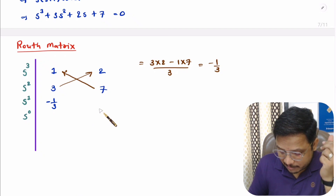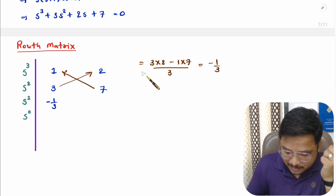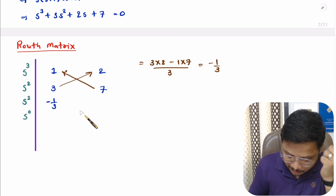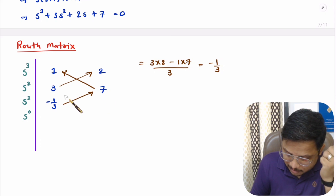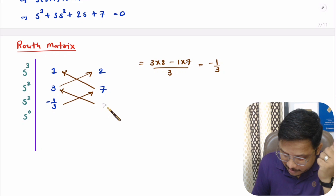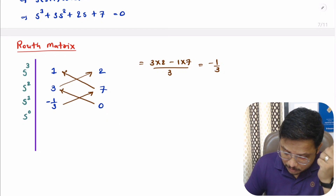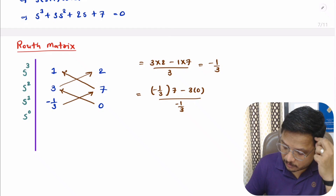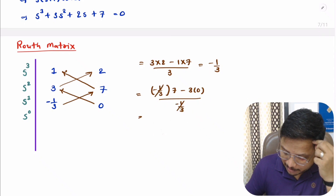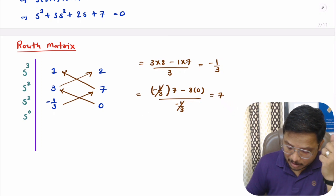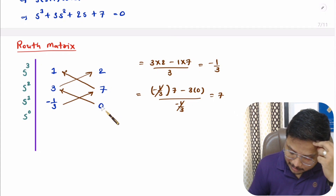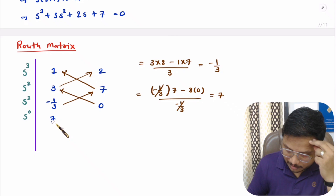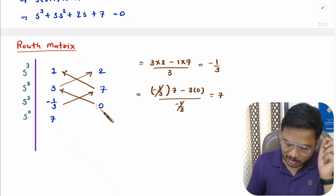The next element in that row is 0 since there are no remaining elements. For the s⁰ row, we calculate: (−1/3 × 7 − 3 × 0) divided by −1/3. The −1/3 terms cancel and we are left with 7. As a shortcut, if this element is 0, you can directly place the element above it, which is 7.